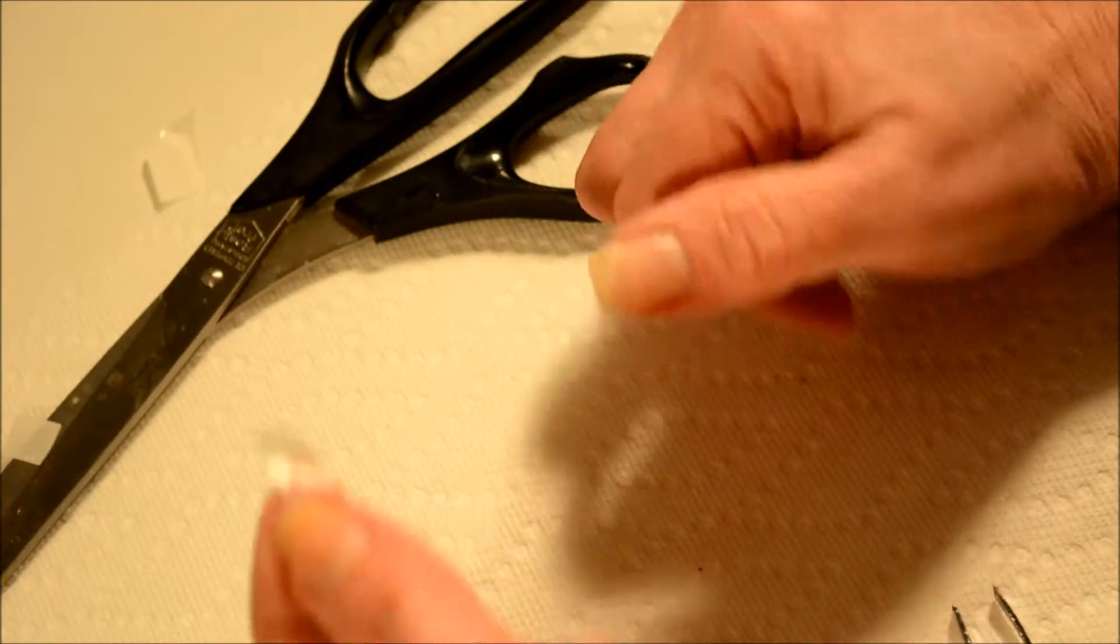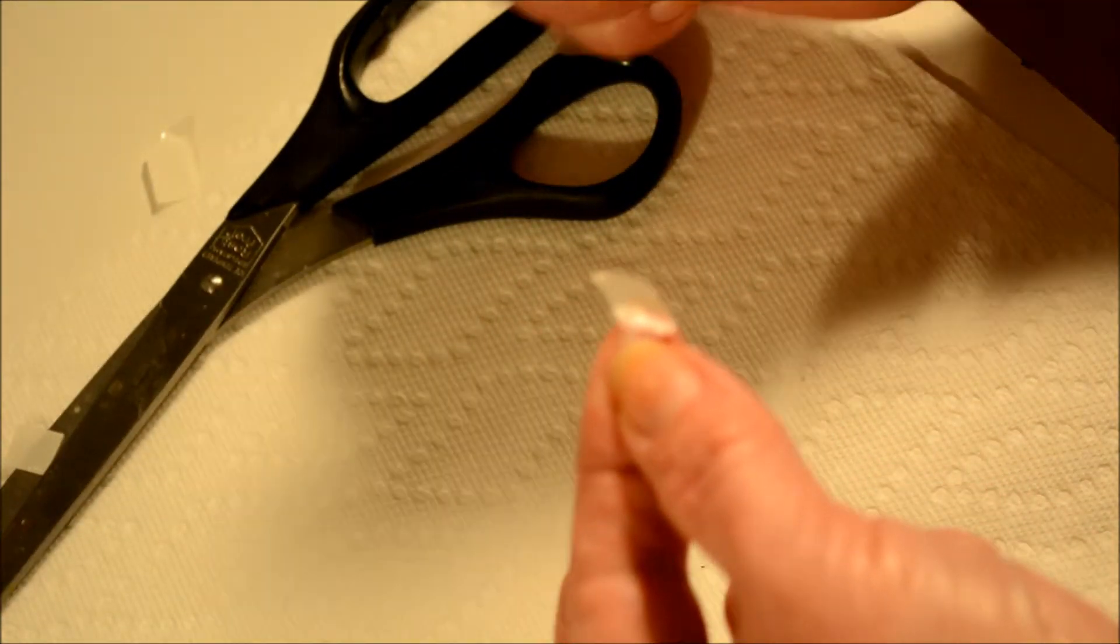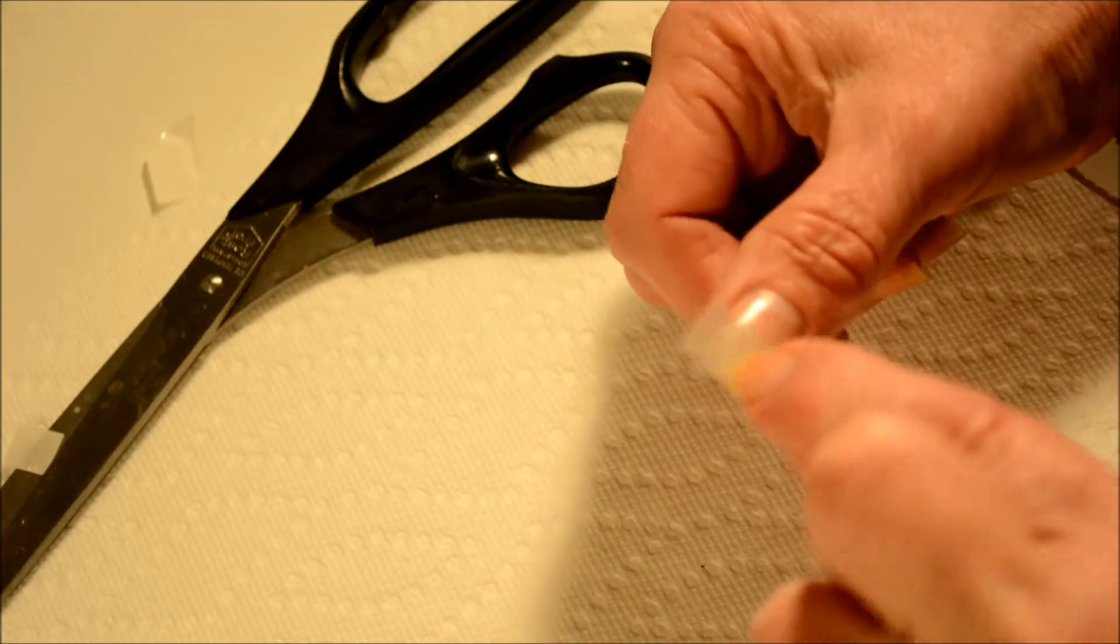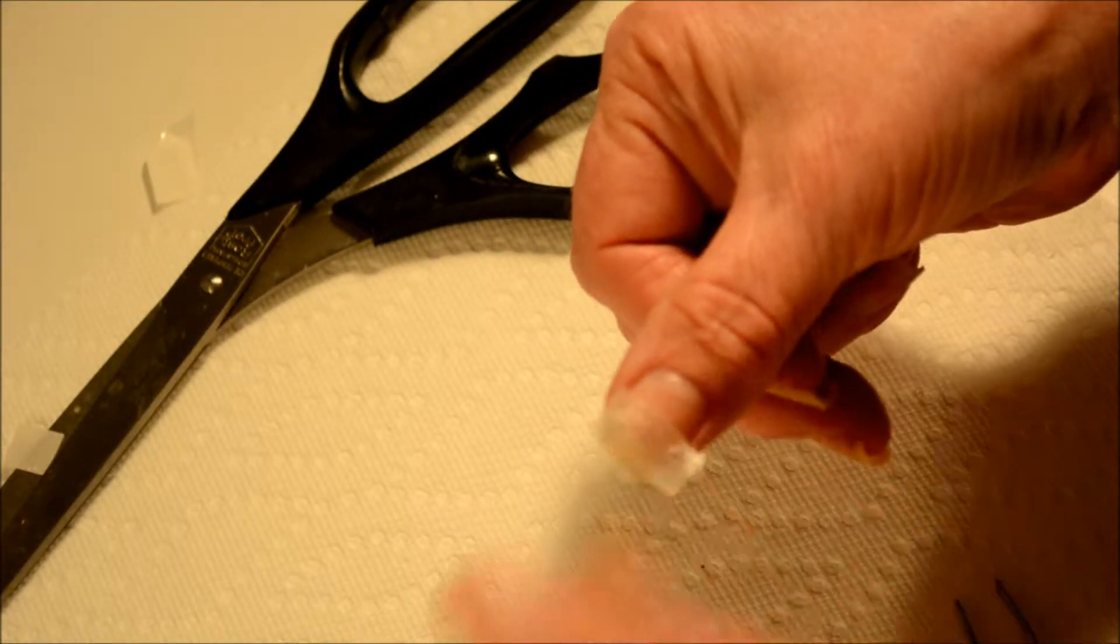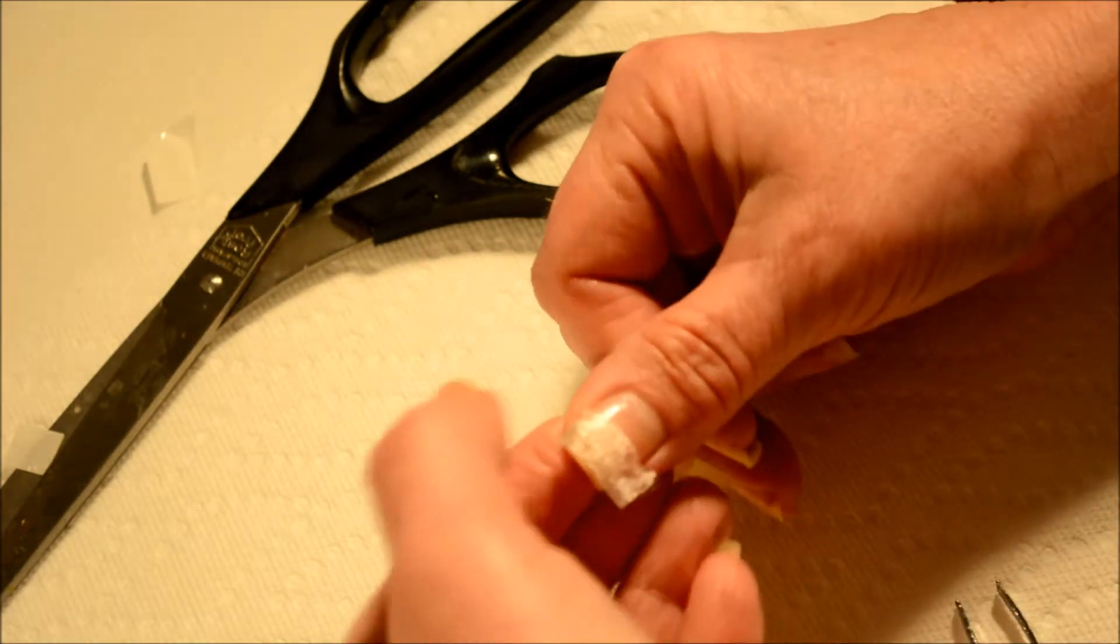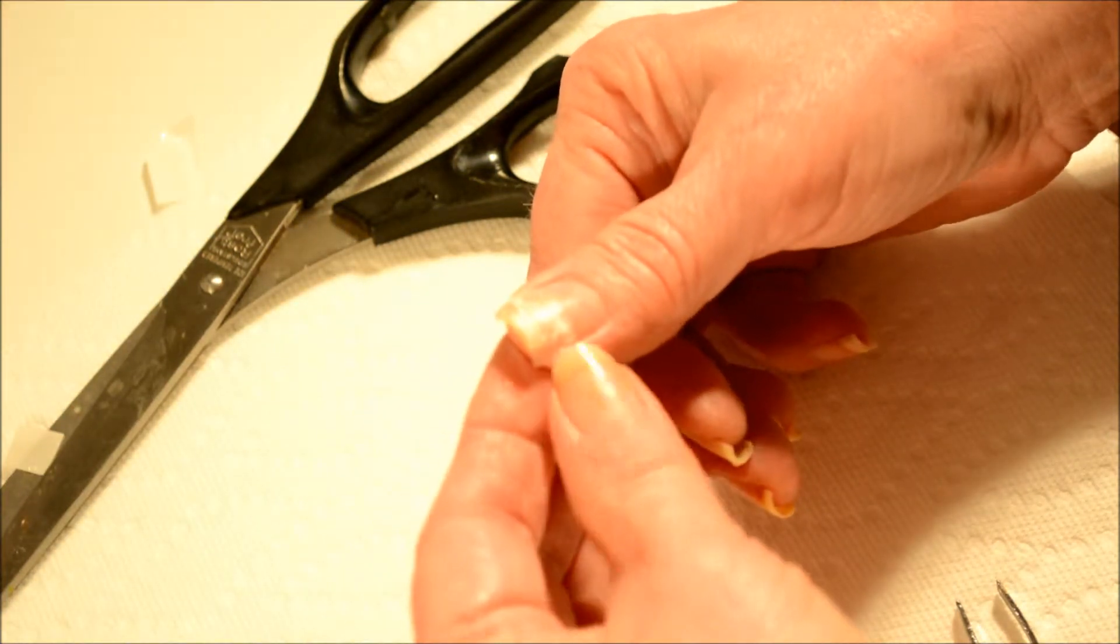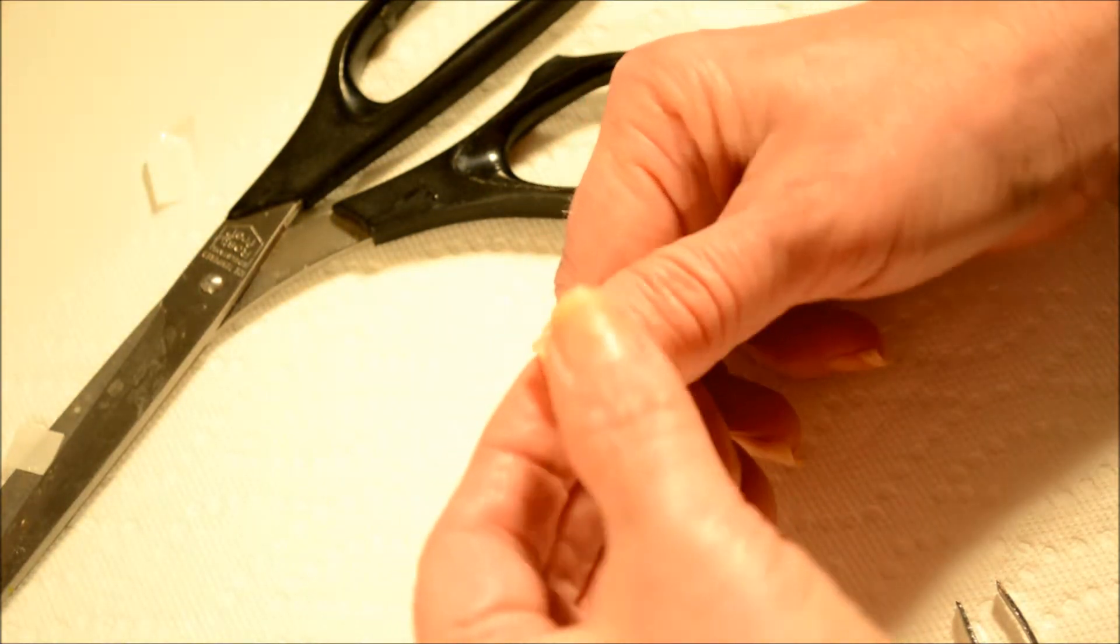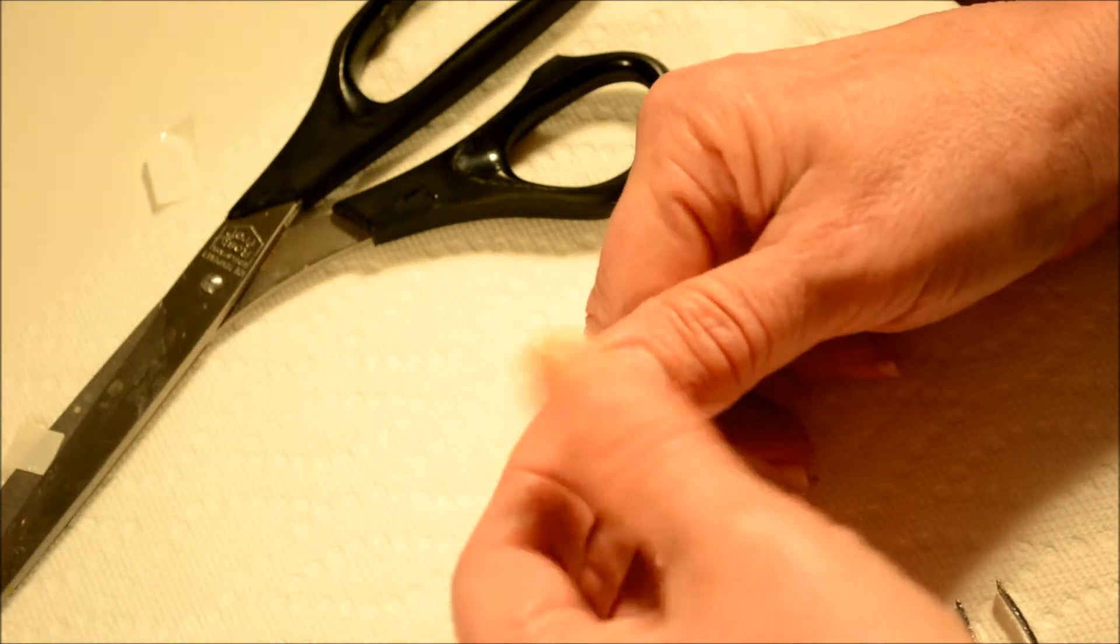You're left with a piece of fiberglass and you're going to take that and it's got one side it's a little tackier than the other. Stick it across your nail and just push it down.